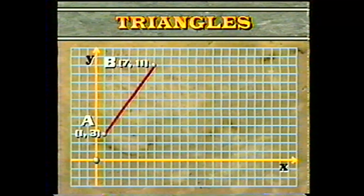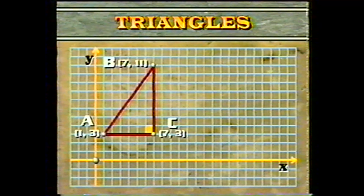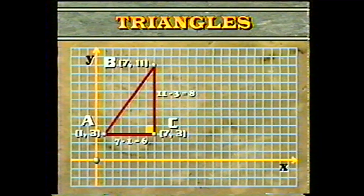The Pythagorean theorem enables us to find the length of any line segment on the coordinate plane. Suppose you are asked to find the length of the line segment between points A and B, whose coordinates are (1, 3) and (7, 11). AB is the hypotenuse of a right triangle. Draw point C at the bottom right corner with coordinates (7, 3). AC and CB are the legs. The length of AC is obtained by subtracting the x-coordinates: 7 minus 1, which equals 6. The length of CB is obtained by subtracting the y-coordinates: 11 minus 3, which equals 8.